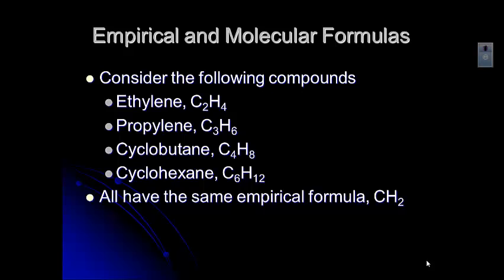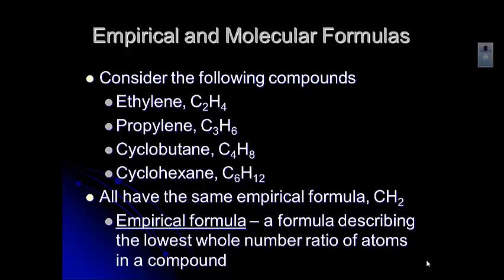So they have the same empirical formula — that lowest whole number ratio of atoms in a compound. You probably remember hearing that from when we talked about ionic compounds. In an ionic compound, we've got that repeating crystal lattice structure of atoms. We can't really count the number of atoms in a compound when it's ionic, so we use that empirical formula to tell us the ratio of the atoms in that compound. And mathematically, we can figure out the empirical formula fairly easily.